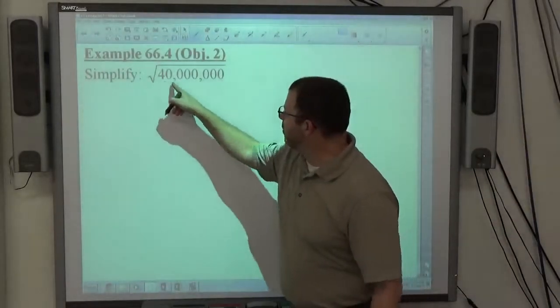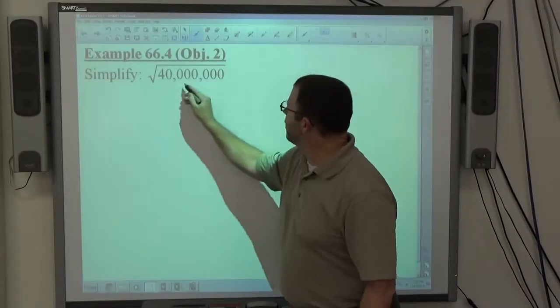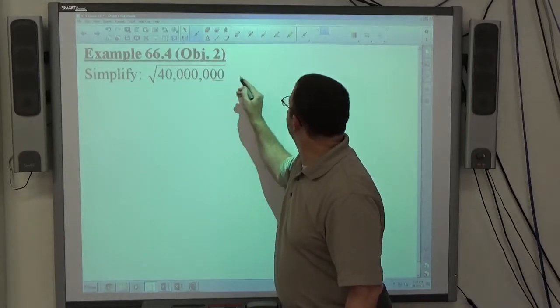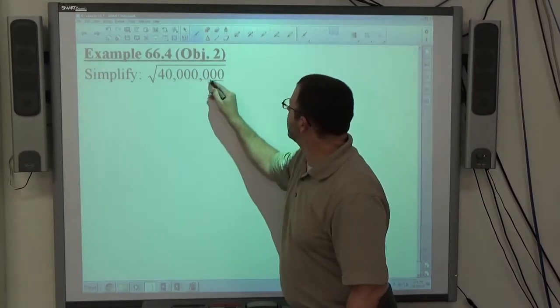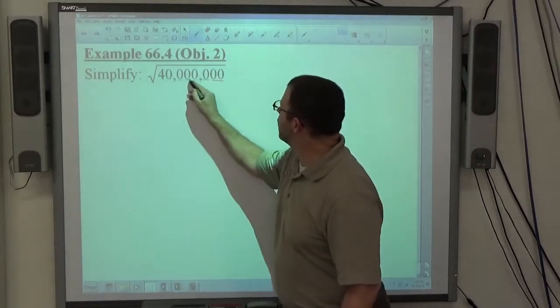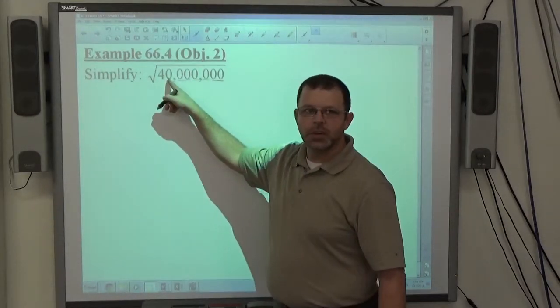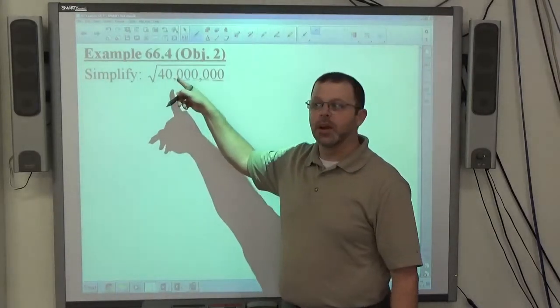So, again, I'm looking at 40 million as the number, and I've got a pair of zeros, I have a second pair of zeros, I have a third pair of zeros, I've got a fourth zero, or a zero that hasn't been dealt with yet, right?